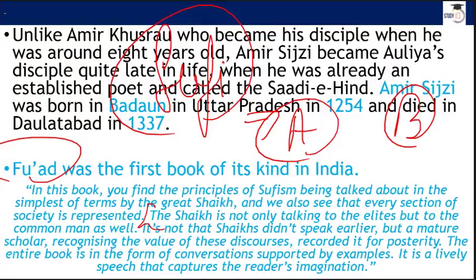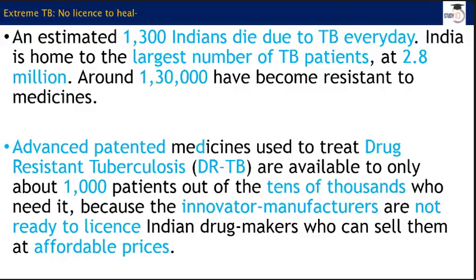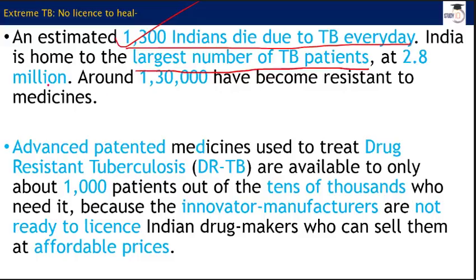TB is a very big public health issue in our country. 1,300 Indians die due to TB every single day. India has the largest number of TB patients — 2.8 million, nearly 30 lakh people. Additionally, 1,30,000 have drug-resistant TB, known as DRTB.